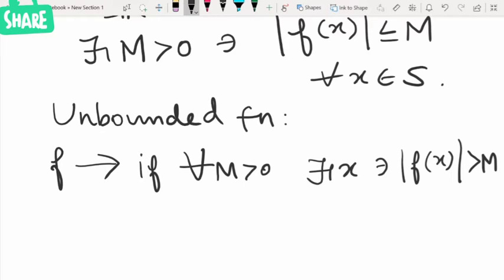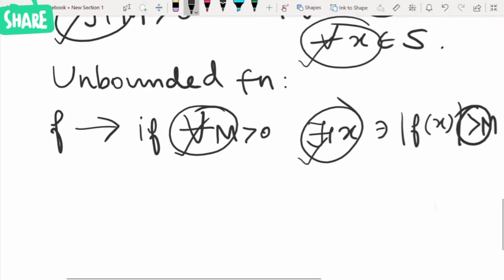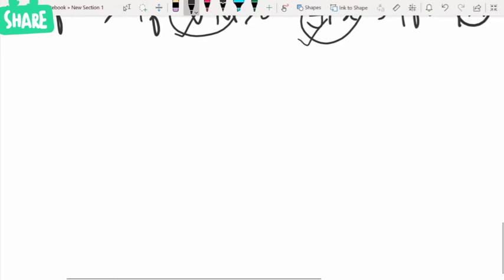This is actually the converse of these things. If here we have the 'there exists' symbol, here it will be 'for all'. And here if we have the 'for all' symbol, here it will change to 'there exists', and this sign also. This is how we write the converse. Now let us see some results on bounded functions.